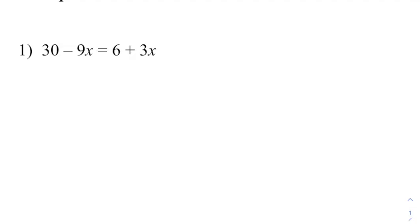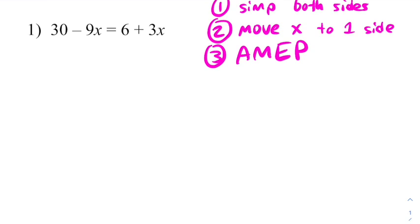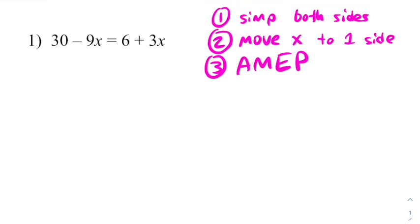In this first example we're going to see that you don't always need all three steps of this process. So remember, the three step process is to simplify both sides, move x to one side, and then solve using AMEP. In this problem, thirty minus nine x is already simplified. Six plus three x is already simplified. So I don't need to do step one because it's already done for me.